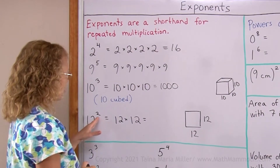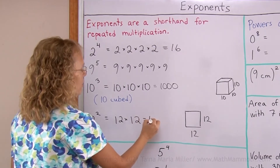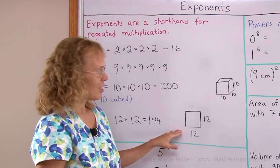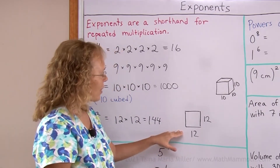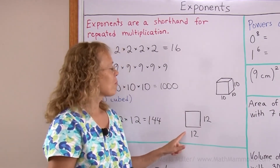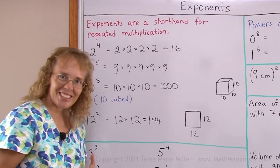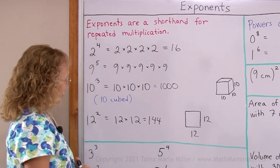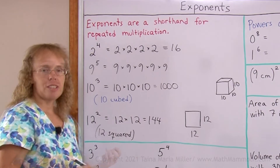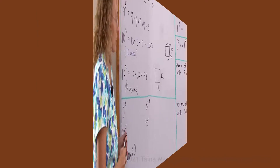Here, twelve to the second power is twelve times twelve, that's 144. But it also reminds us of a certain other calculation that often comes up in geometry. This is a square — if you want to find the area of a square you have to multiply twelve times twelve. So therefore this expression has also another name. It is also called twelve squared. People don't often call it twelve to the second power; they usually call it twelve squared because of that.